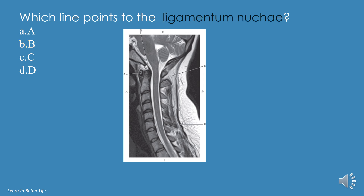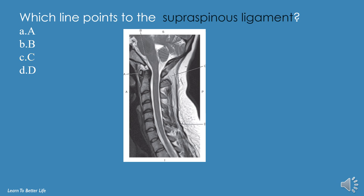Which line points to the ligamentum nuchae? A, B, C, or D? The answer is C. Which line points to the supraspinous ligament? A, B, C, or D? The answer is D.